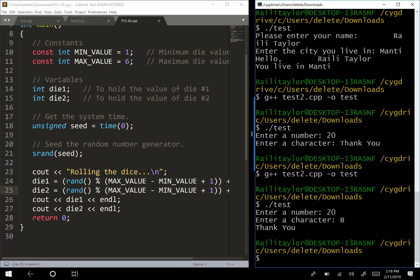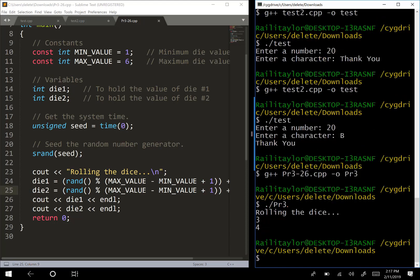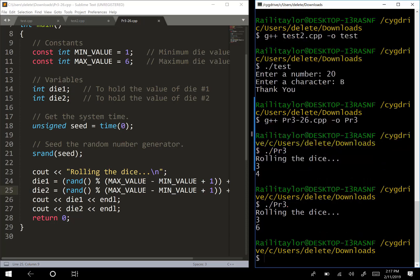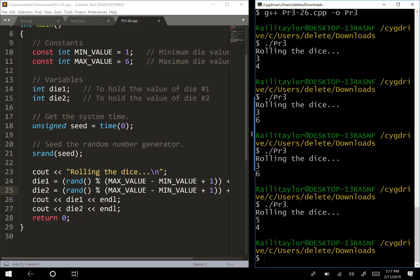So depending on what you're doing with the program, you might want to display those to the user, or if you're generating a random number for another part of your program, then you would just go ahead and use this. So let's compile this and run it. So I'm going to compile it, and then let's run this, and so it gives me 3 and 4. Let's run it again. 3 and 6. Well, that's not looking too random. Well, there it is. 5 and 4.